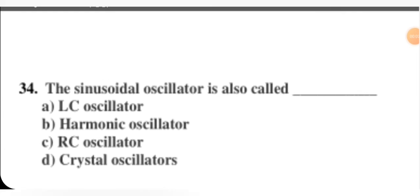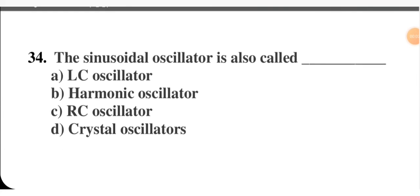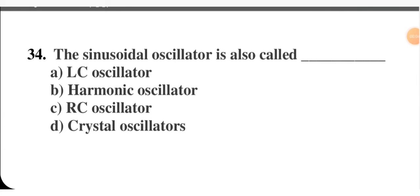The sinusoidal oscillator is also called — LC oscillator, harmonic oscillator, RC oscillator, or crystal oscillator? A harmonic oscillator is also called a sinusoidal oscillator, so option B is the correct option.